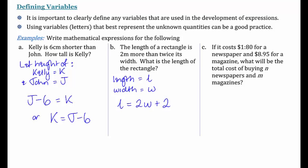Next, if it costs $1.80 for a newspaper and $8.95 for a magazine, what will be the total cost of buying N newspapers and M magazines? Well, we'll let cost equal C. We already have our variables for how many magazines we're buying and how many newspapers we're buying. So that's given to us.